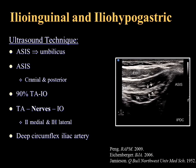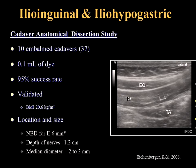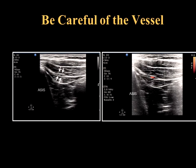With the probe lateral, you can see the external oblique, internal oblique, transverse abdominus, and the nerves between them. This technique has been validated in 10 embalmed cadavers with 37 blocks using 0.1 mL of dye, achieving a 95% success rate for technical accuracy. The needle-to-nerve-to-bone distance for the ilioinguinal was about 6 mm, depth of nerves was 1.2 cm, and the median diameter of the nerves was small. It's very important to use the Doppler function because you can mistake the deep circumflex iliac artery for the nerves.